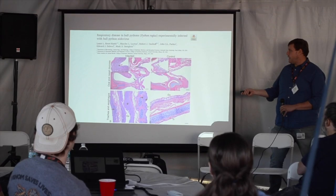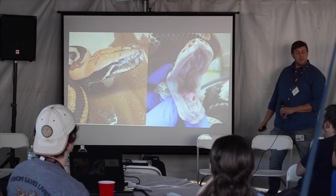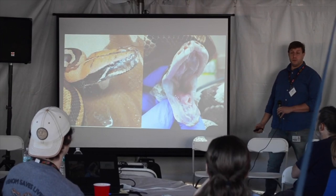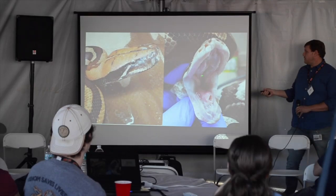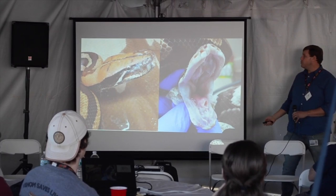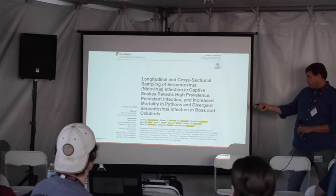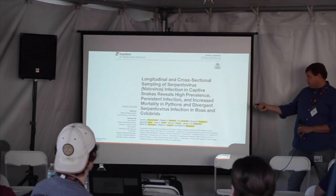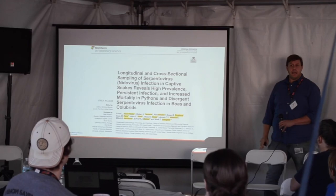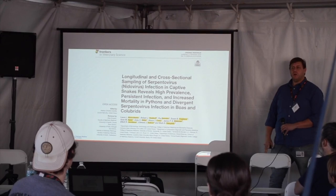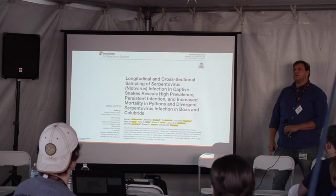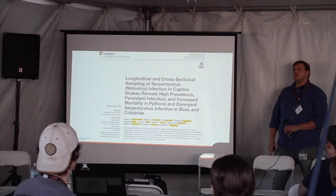What does nidovirus or serpentovirus look like in pythons? The initial presentation is usually the presence of abundant excess mucus, open-mouth breathing, labored breathing. Here's a ball python — you can see all that clear mucoid material right next to the trachea. Here's a blood python — you can see all that snotty stuff around the nose. They're producing copious oral secretions. At this point it is safe to say most pythons are susceptible to these viruses. And we're not just talking about one virus.